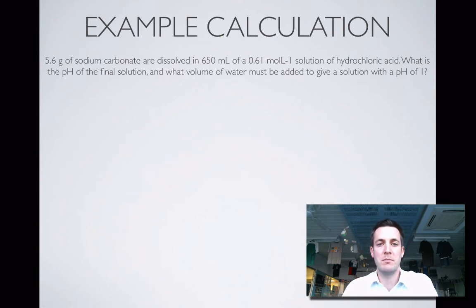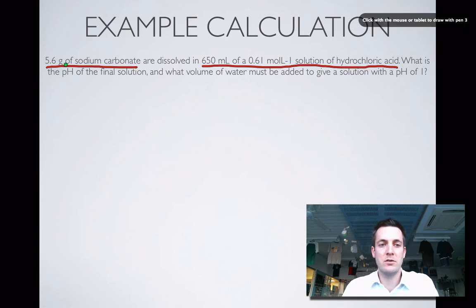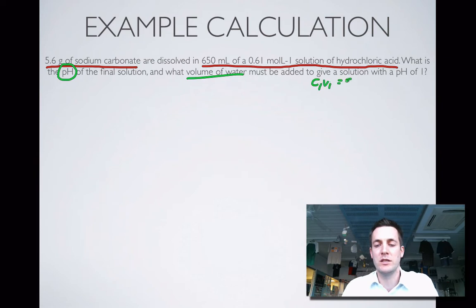In fact, this isn't a solution being mixed, it's a solution being mixed with a solid. So here's our solid, 5.6 grams of sodium carbonate dissolved in 650 mL of this solution of hydrochloric acid. We're being asked to find the pH of the final solution and what volume of water has to be added to give us a final solution of pH 1. Adding water, that sounds like a C1V1 equals C2V2 dilution type problem. Looking at what we're asked here, what is the pH? pH is minus log to the base 10 of the H plus ion concentration, and the H plus ion concentration is the number of moles of H plus divided by the volume. So they're the sort of things I might be using here. It's a good idea to think about what formulas you're going to use before you launch into the question.